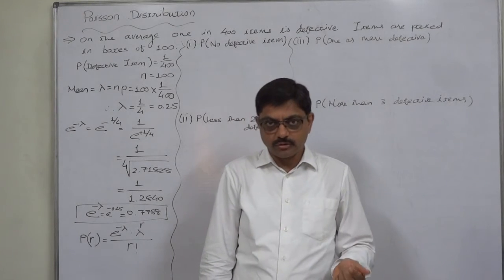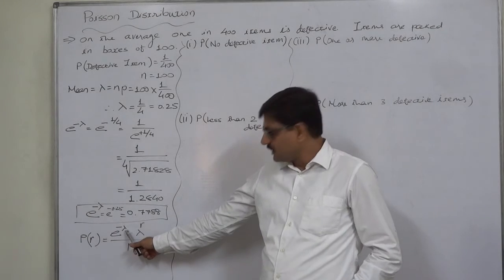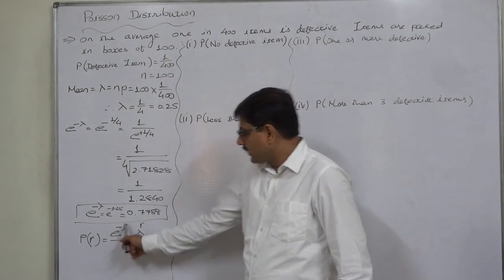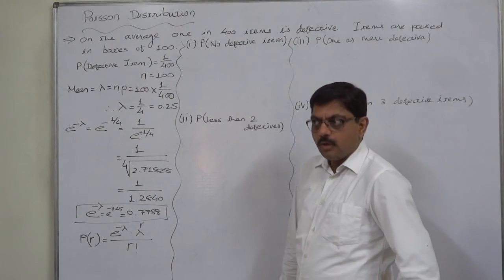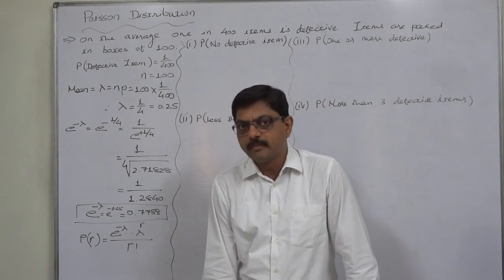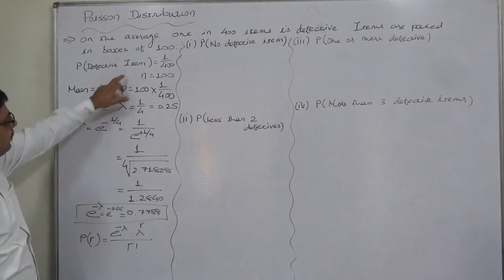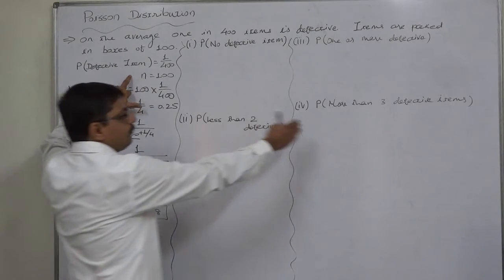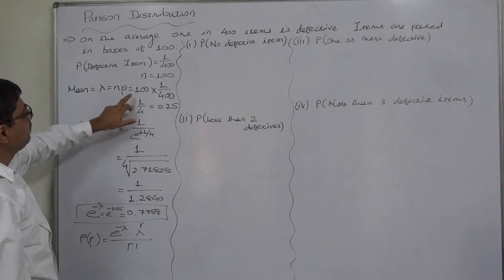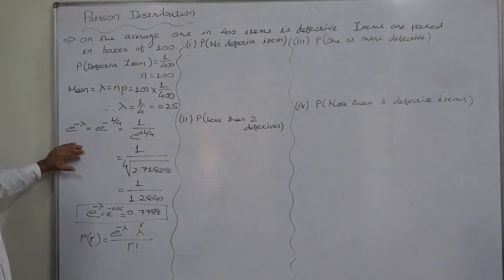To use the Poisson distribution, we need the mean, because the formula requires e raised to minus mean and mean raised to r. Using the binomial distribution to calculate the mean: mean = NP, where n = 100 and P is the probability of a defective item = 1/400. Therefore, NP = 100 × (1/400), so the mean is 1/4 or 0.25.